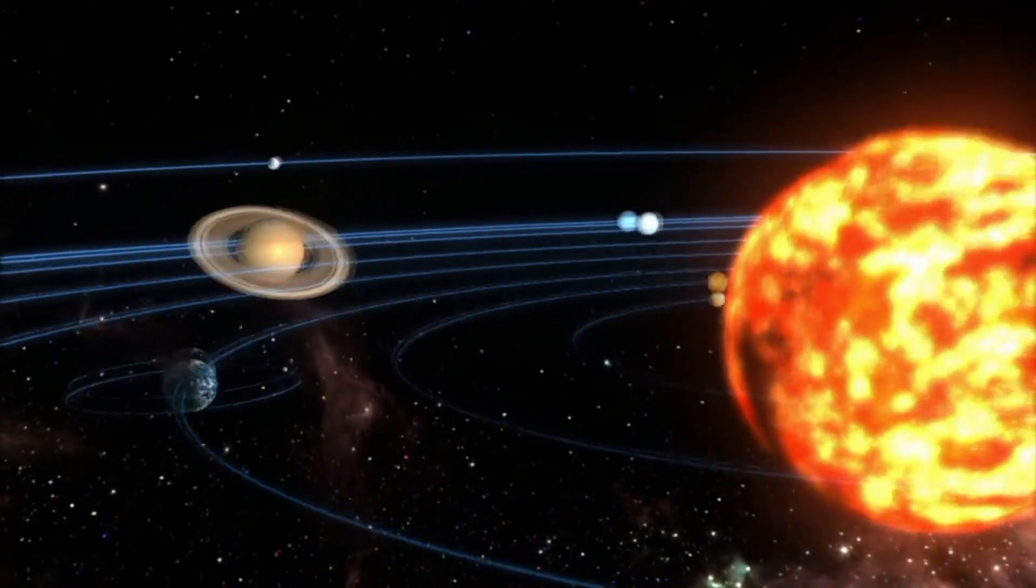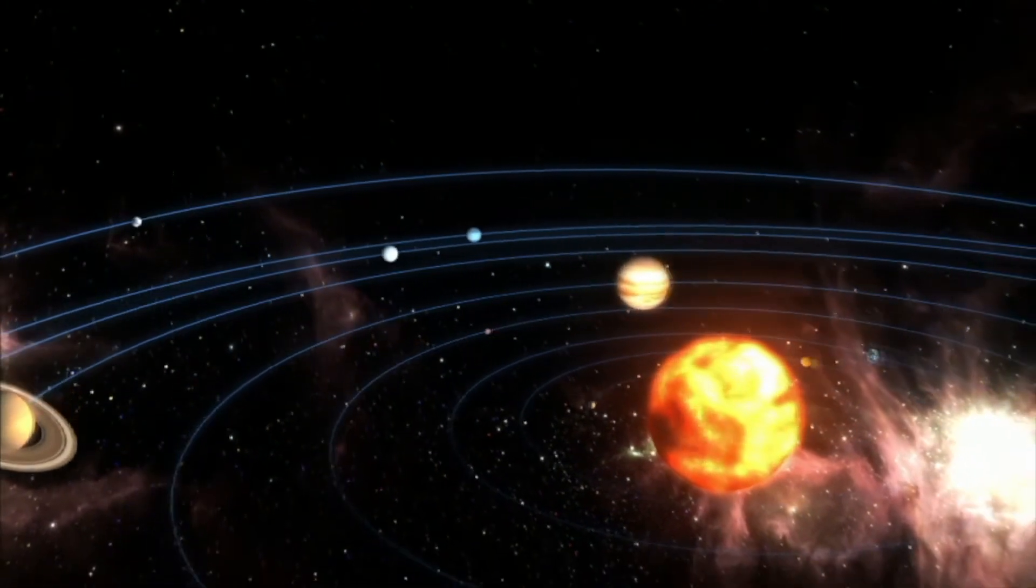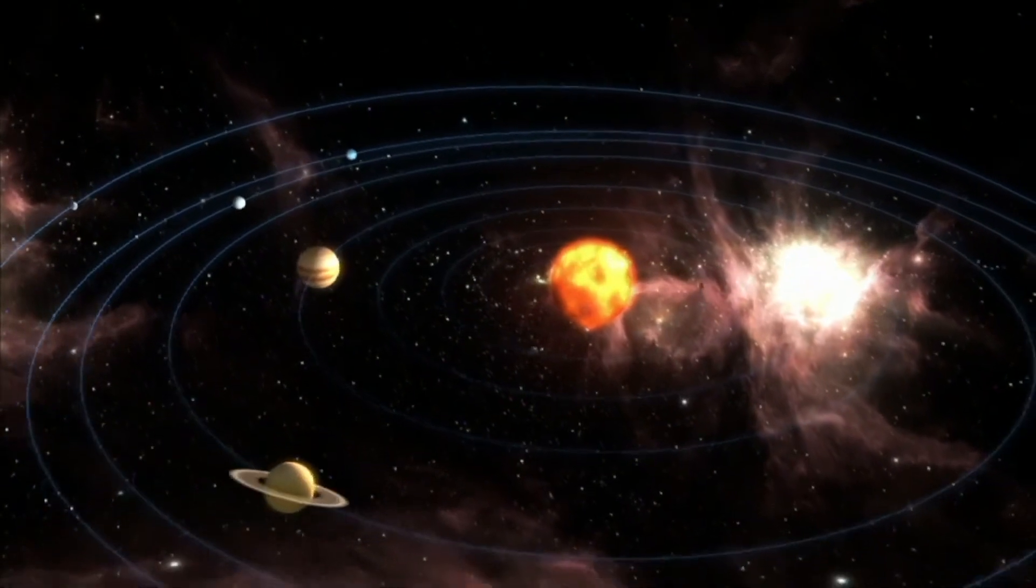The planets in our solar system orbit or revolve around the sun in a counter-clockwise fashion, or the opposite direction of a clock.